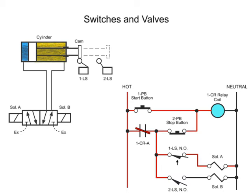This allows the relay to hold a circuit through the stop button and contacts 1CRA. Once the contacts are closed and connected, the coil will remain energized even if the start button is released.